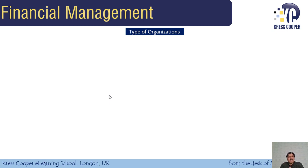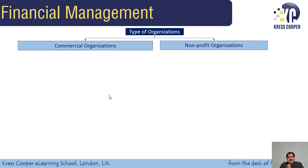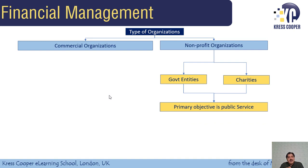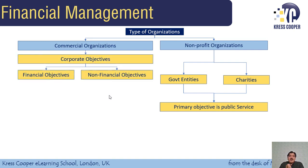What is Financial Management? What is the objective of Financial Management? Generally, there are two types of organizations: commercial organizations and non-profit organizations. Non-profit organizations are usually government entities and charities. The primary objective of government entities and charities is public welfare — the primary objective is not to maximize the wealth of shareholders. On the other hand, commercial organizations have both financial objectives and non-financial objectives.